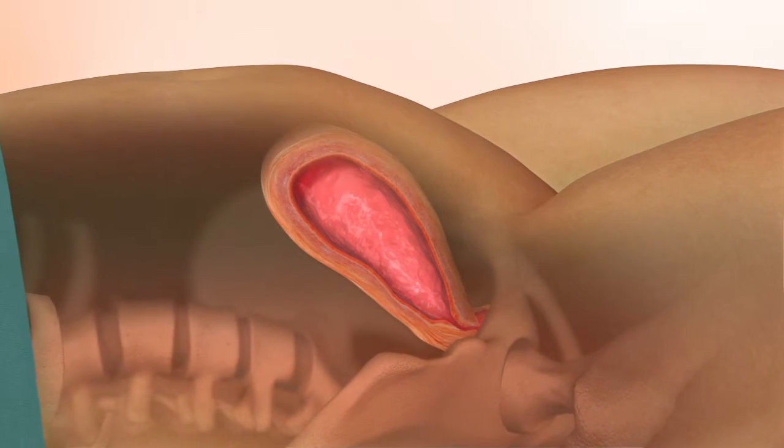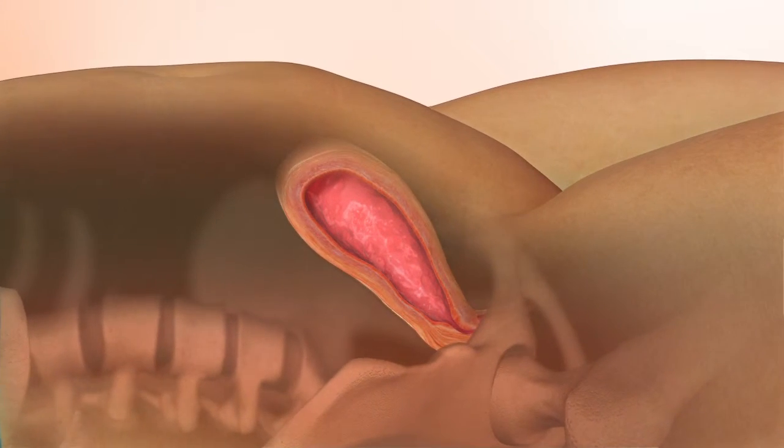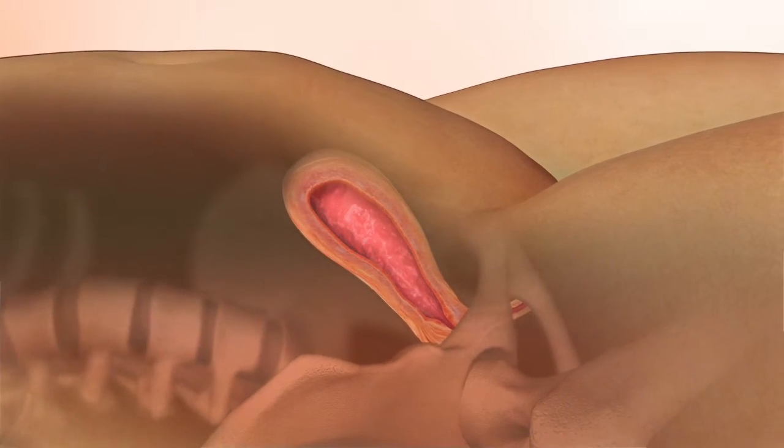In most cases of vaginal delivery, however, the myometrium contracts firmly, compressing the blood vessels and thereby reducing blood flow.